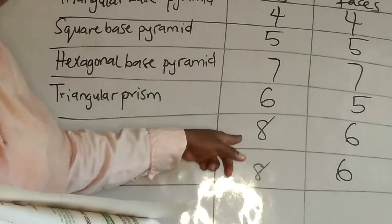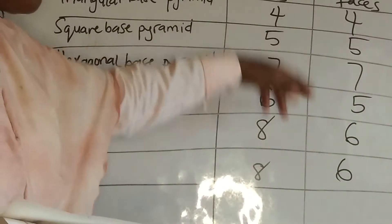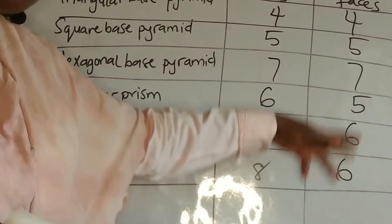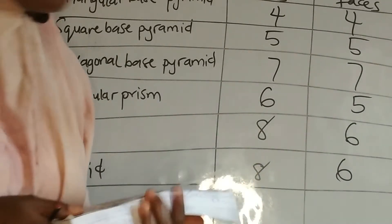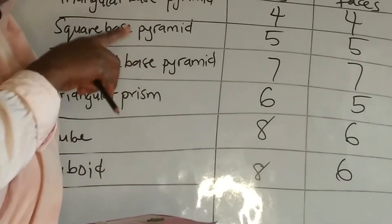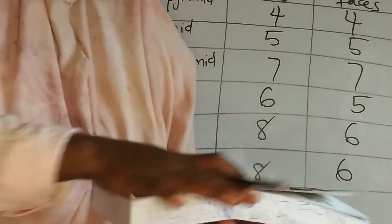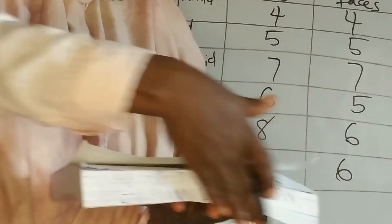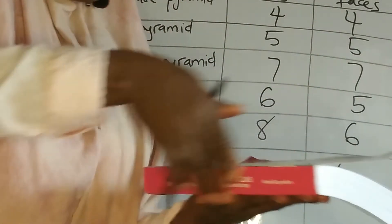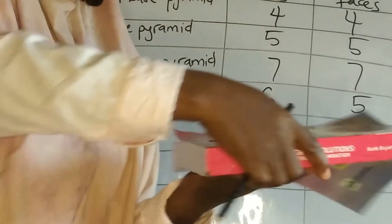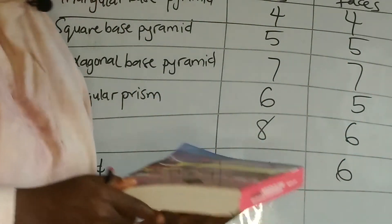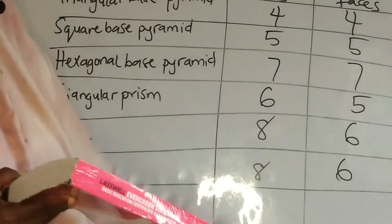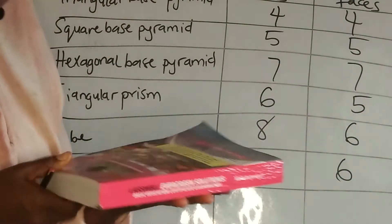The same applies to both a cuboid and a cube. Now let's look at the number of faces. The number of things a cube has is the same as that of a cuboid. They said it has six faces — let's check: this is one, underneath is two, this is three, this is four, this is five, and this is six. Those are the six faces.